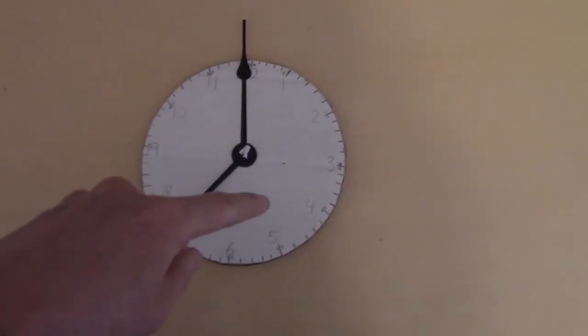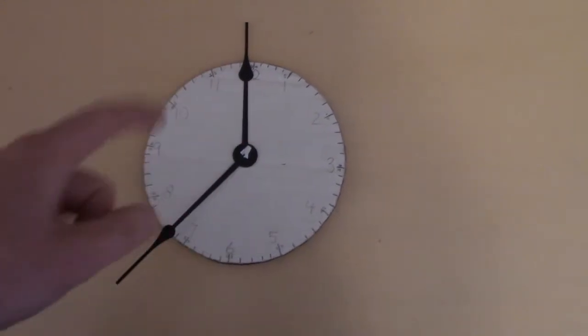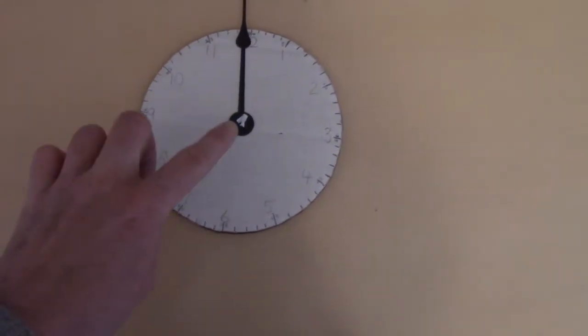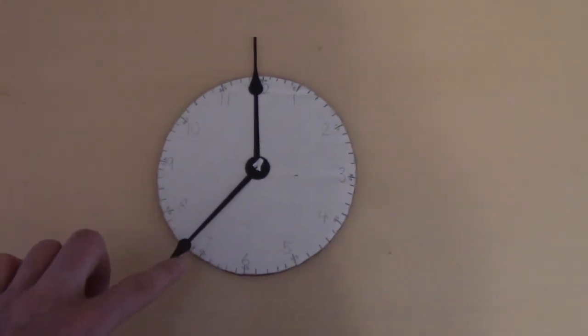So I traced it and cut it out with scissors. I only had to buy these clock hand pieces, which was a little over $2.